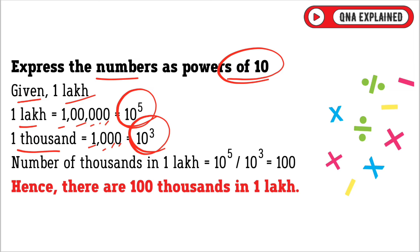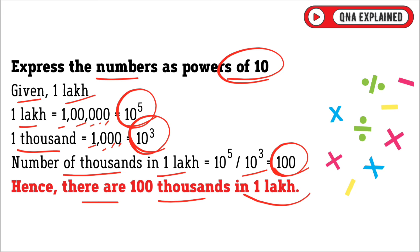The number of thousands in 1 lakh equals 10 raised to the power 5 divided by 10 raised to the power 3, which equals 100. Hence, there are 100 thousands in 1 lakh.